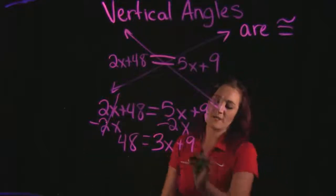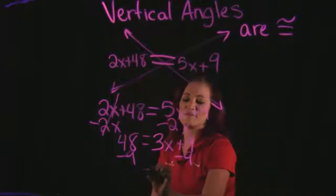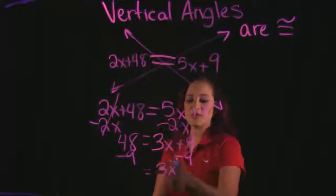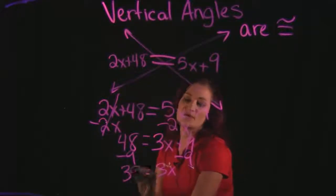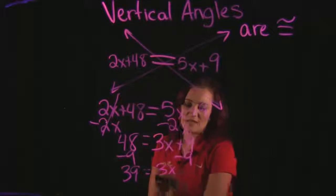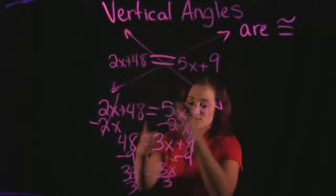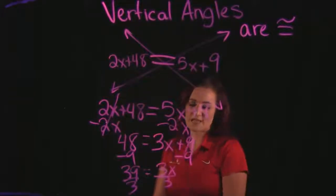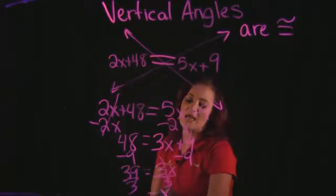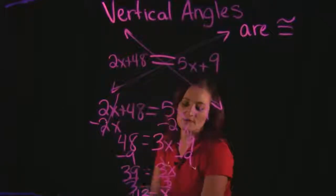I'm going to move my number to the left-hand side then. So subtracting 9 from each side will give me that 3x is equal to 39. The only thing left to do to wrap up this portion of the problem is to divide both sides by the coefficient and I get that x is equal to 13.